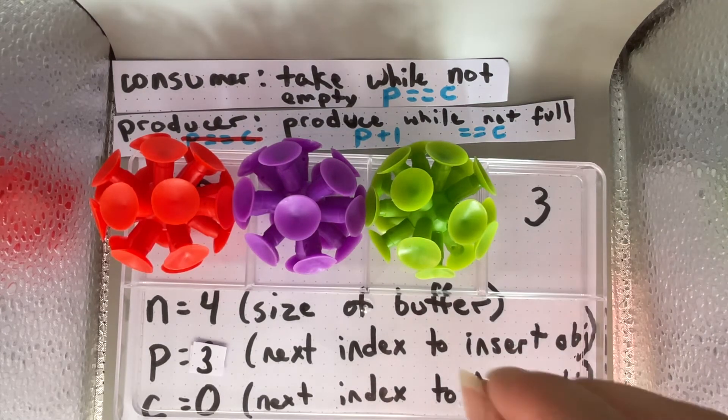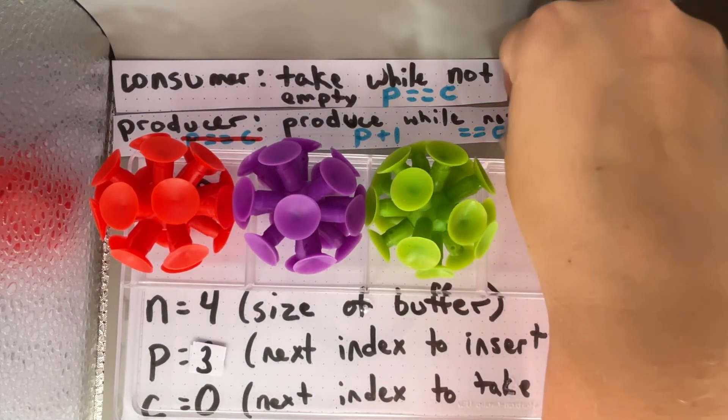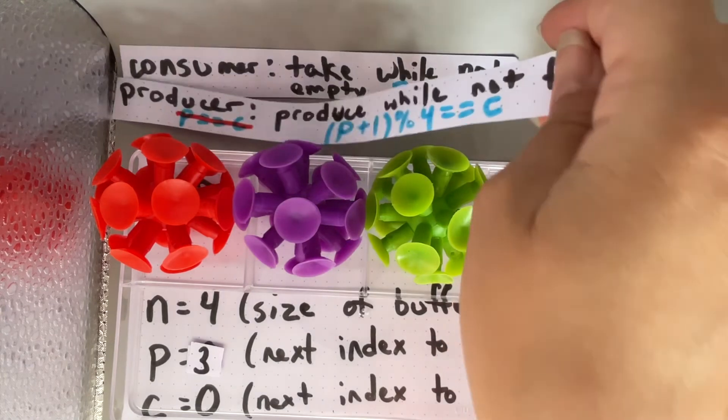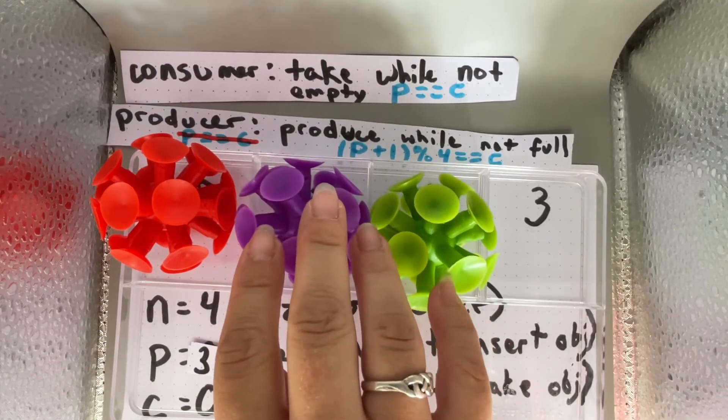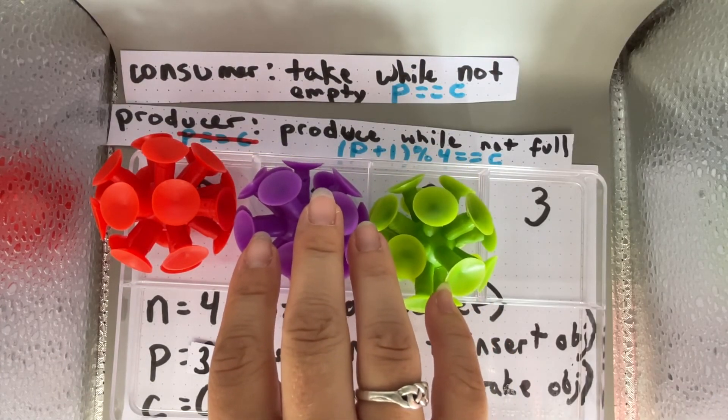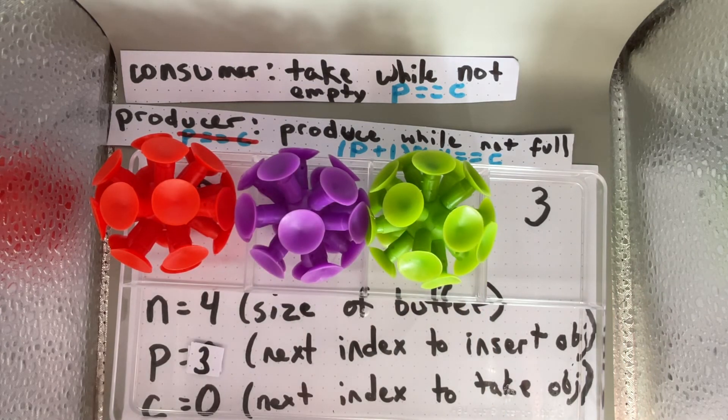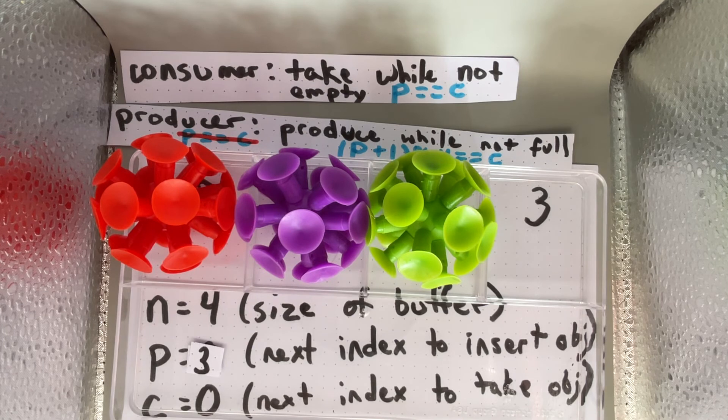In this case, the answer is yes, but only if we are using modulo arithmetic. We're saying that p plus one modulo 4 equals c, and therefore our buffer is still full and the producer is not allowed to produce another object yet.